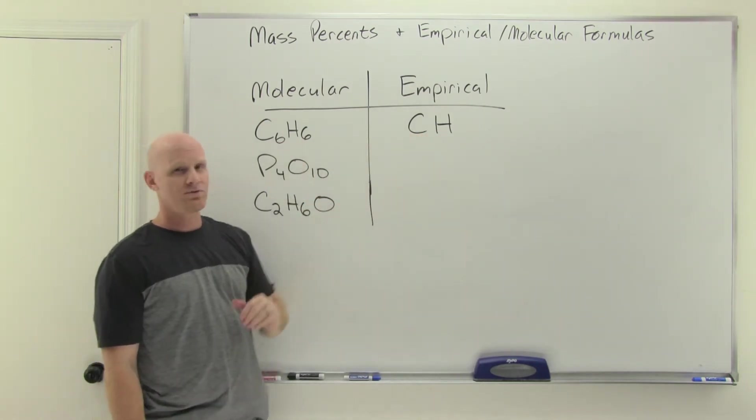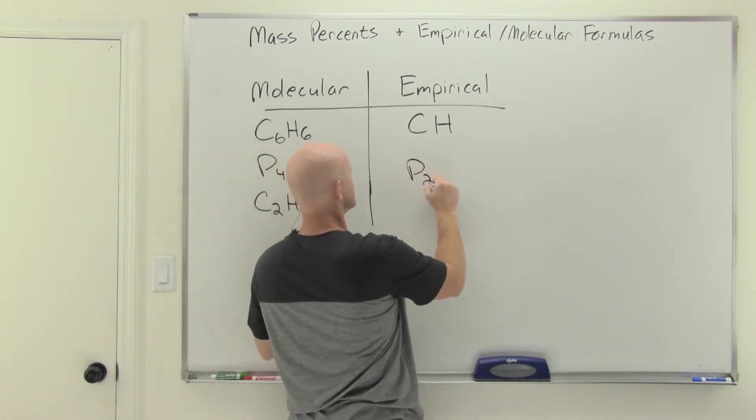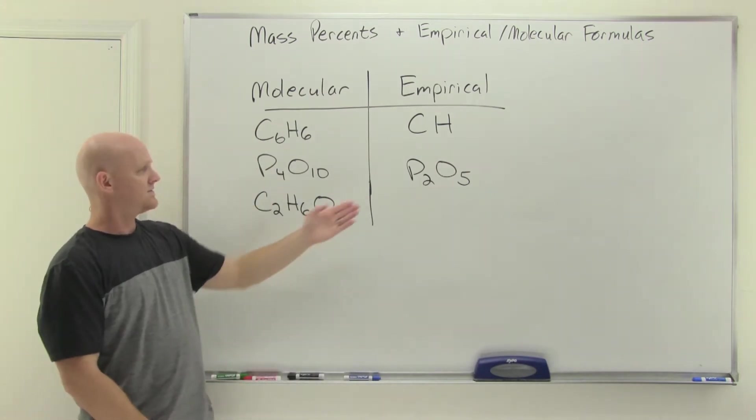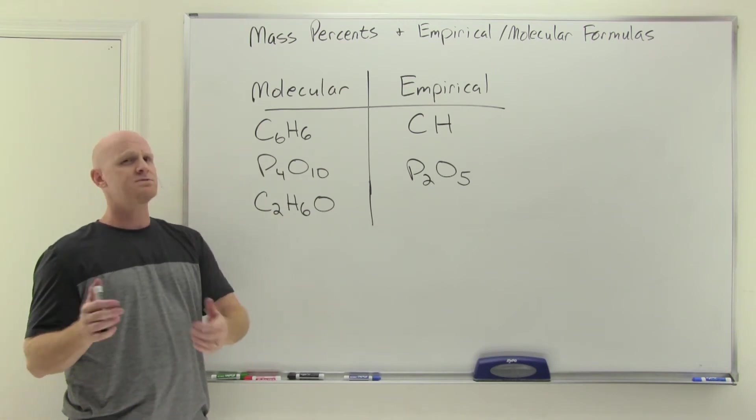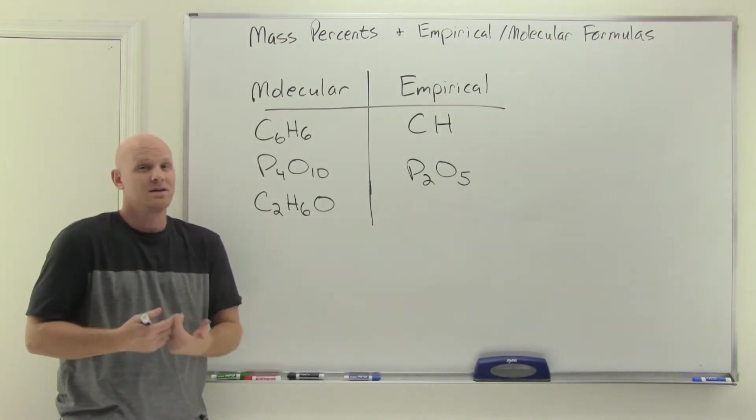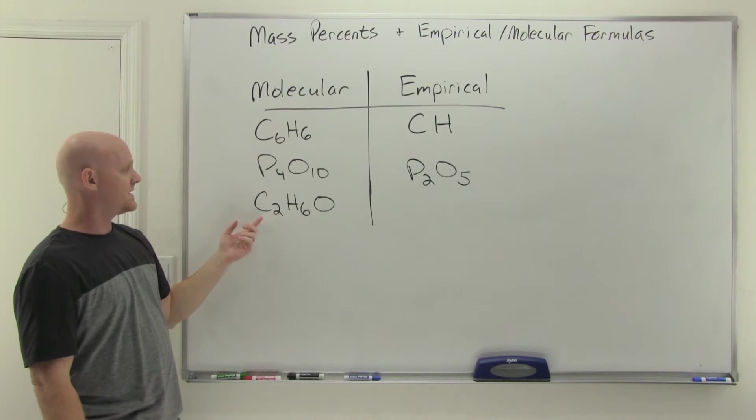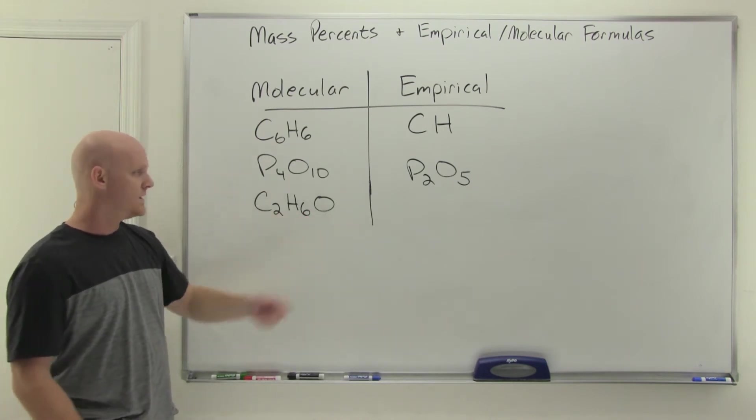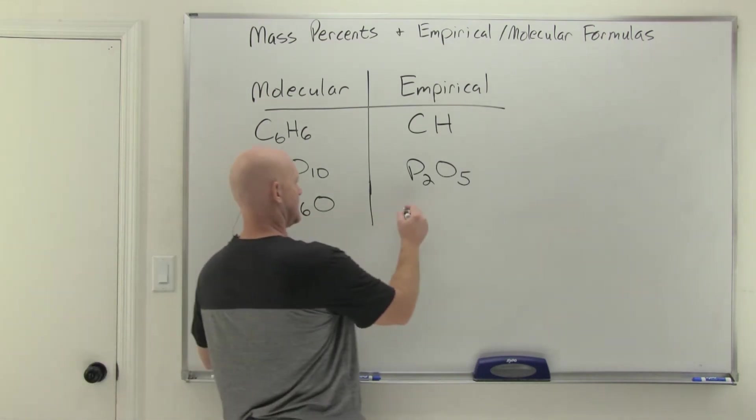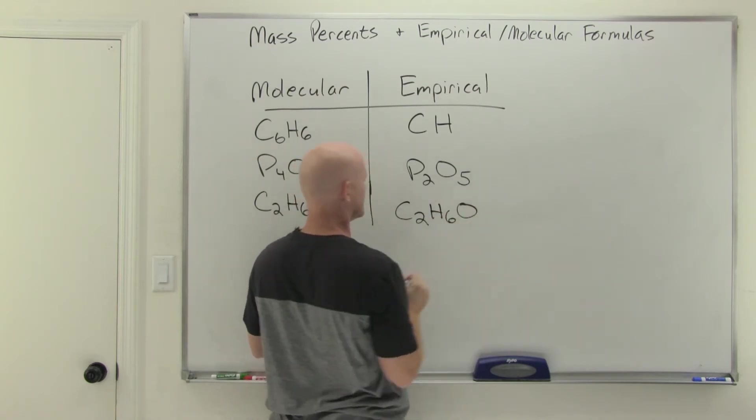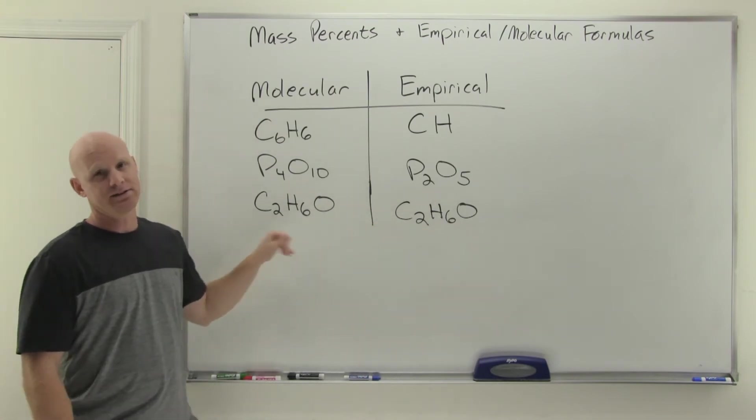Same thing with P4O10, a four to ten ratio can be reduced down to a two to five ratio. Our empirical formula is going to be somewhat different than the molecular. But what you'll find out is that for the vast majority of compounds, your molecular and empirical formula end up being one and the same. I had to cherry pick a couple examples so you could see the difference. If you take a look at ethanol, C2H6O, a two to six to one ratio can't be reduced down any further. In the case of ethanol, its molecular formula and its empirical formula are exactly the same.